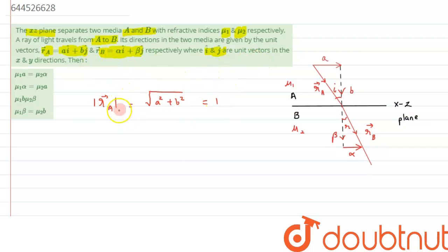Similarly for rb bar, we can write it can be written as under root alpha square plus beta square, and that is equals to again one.